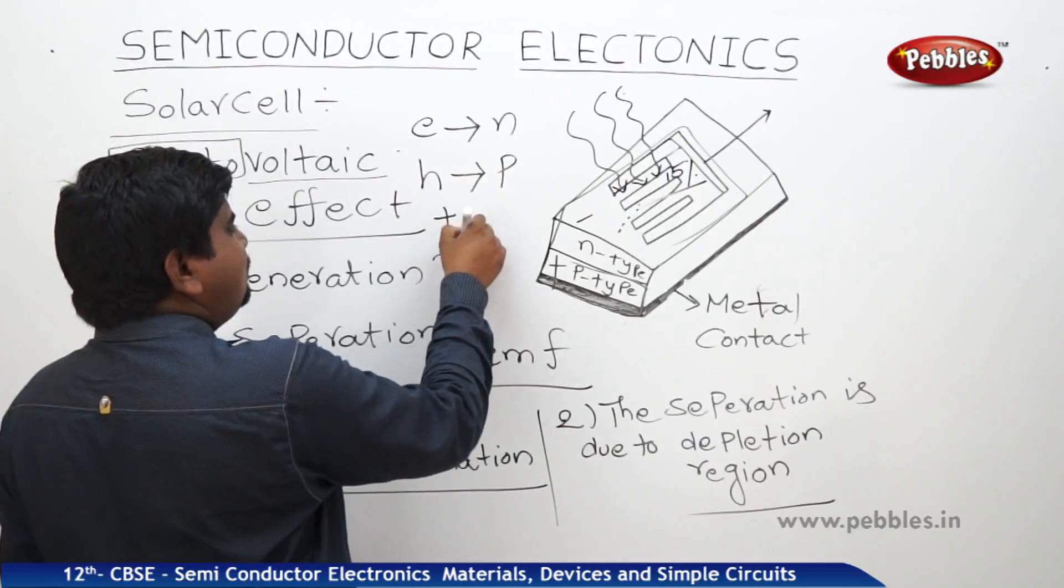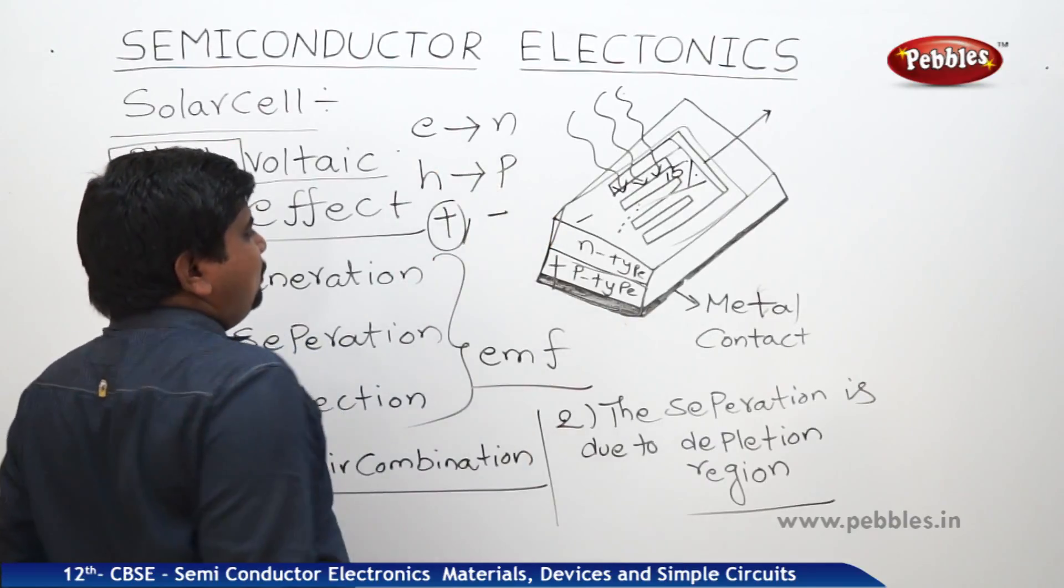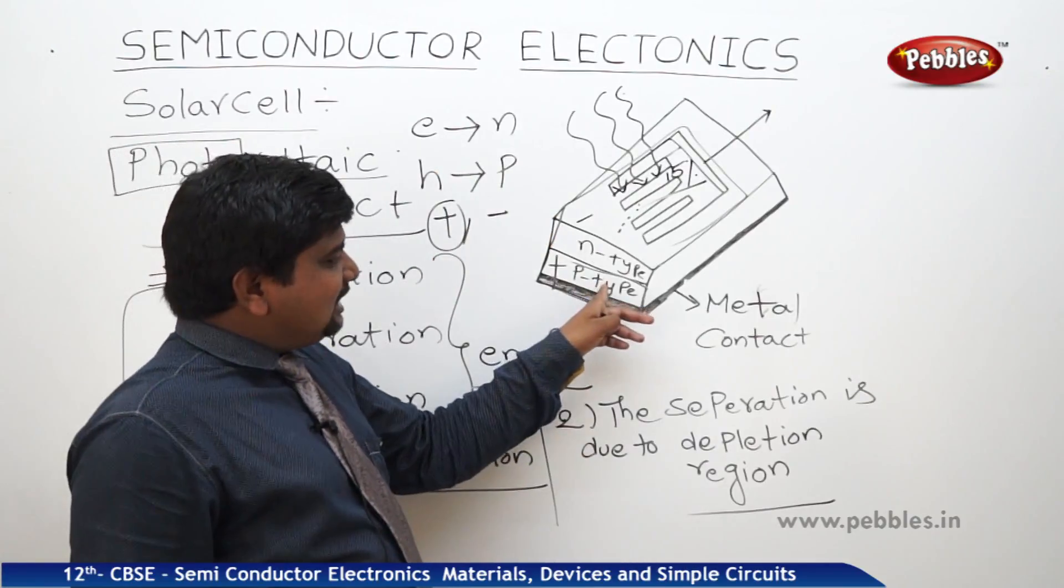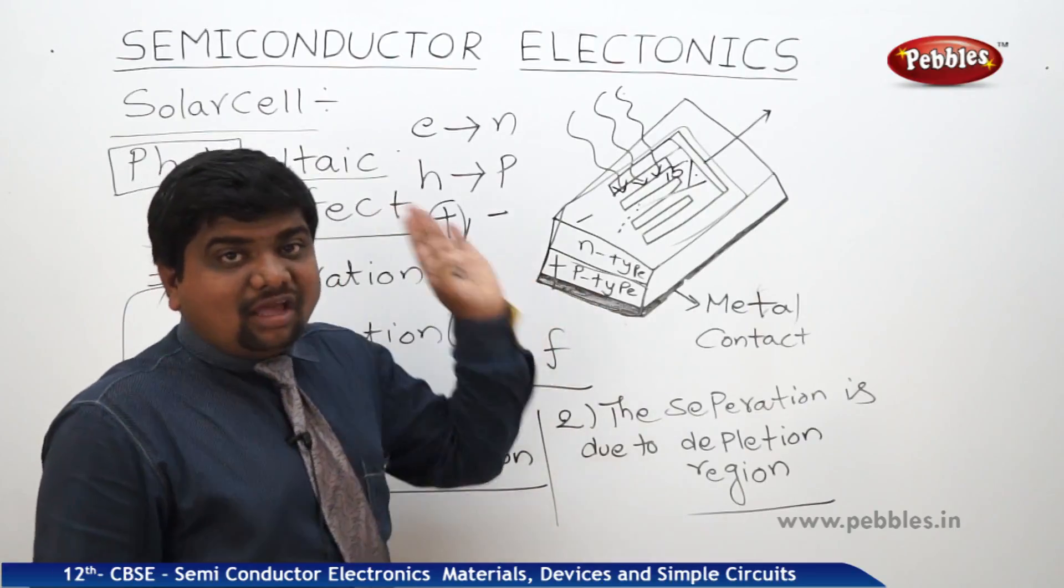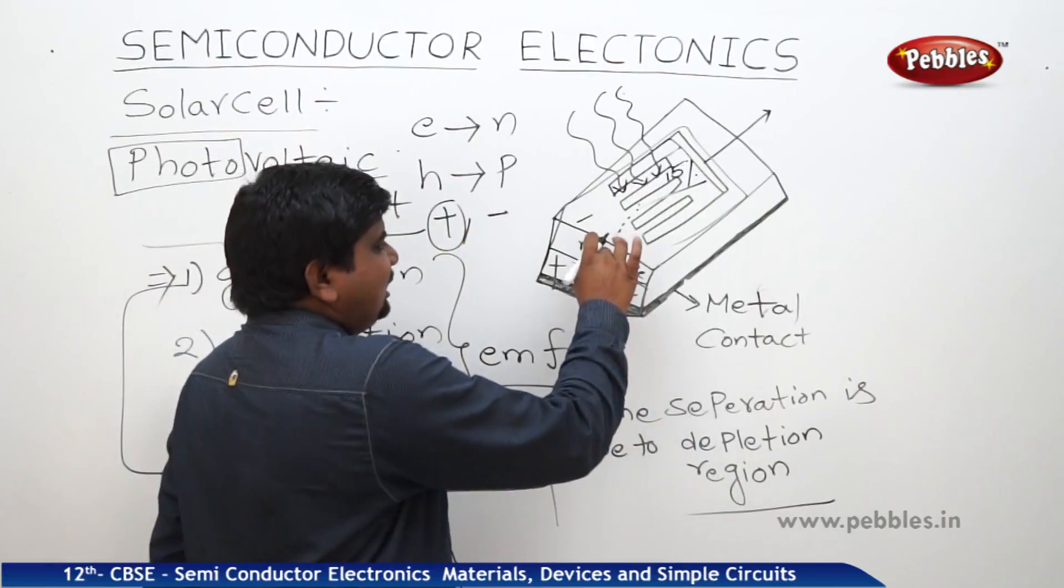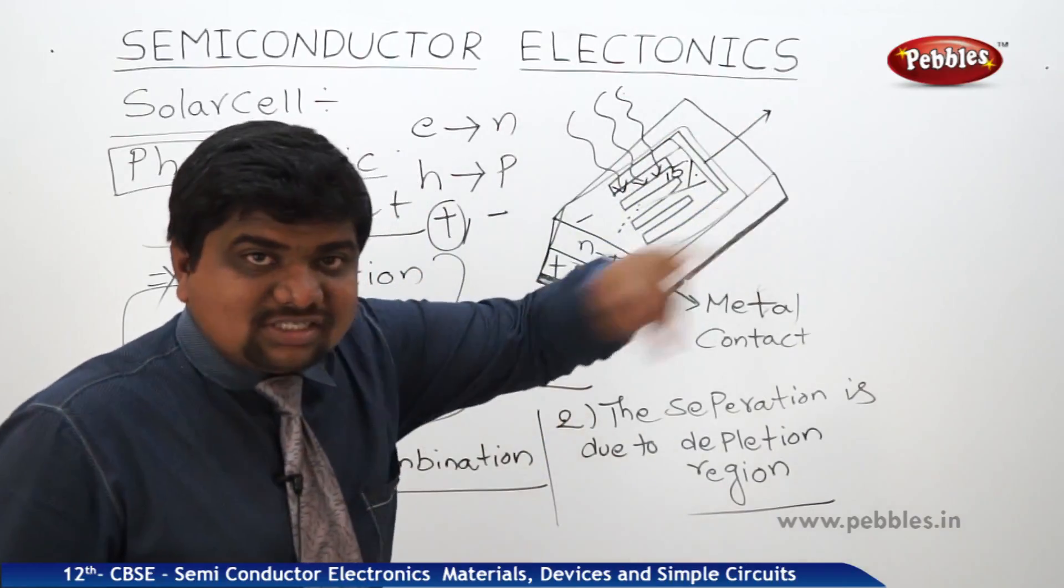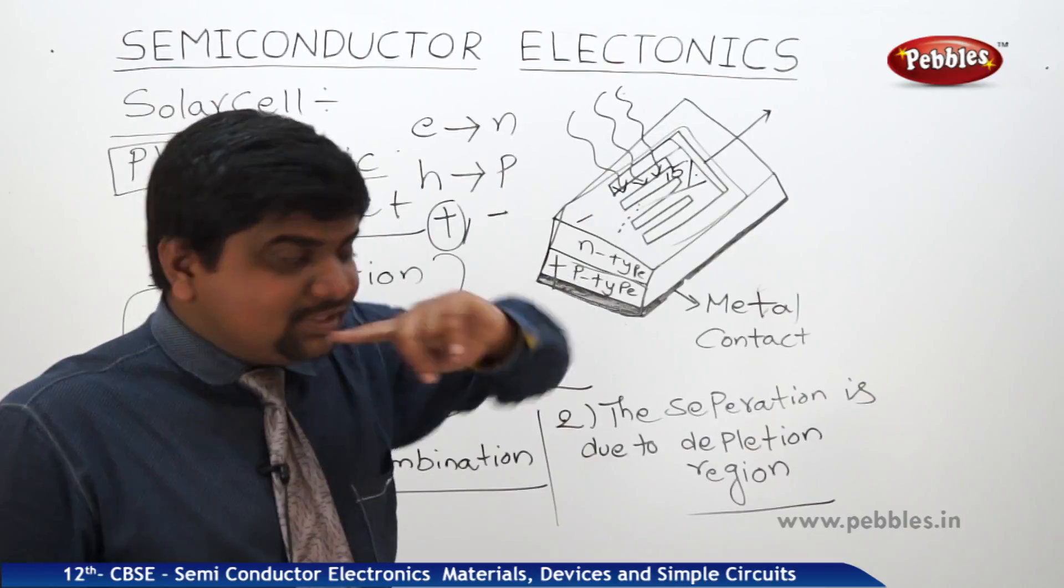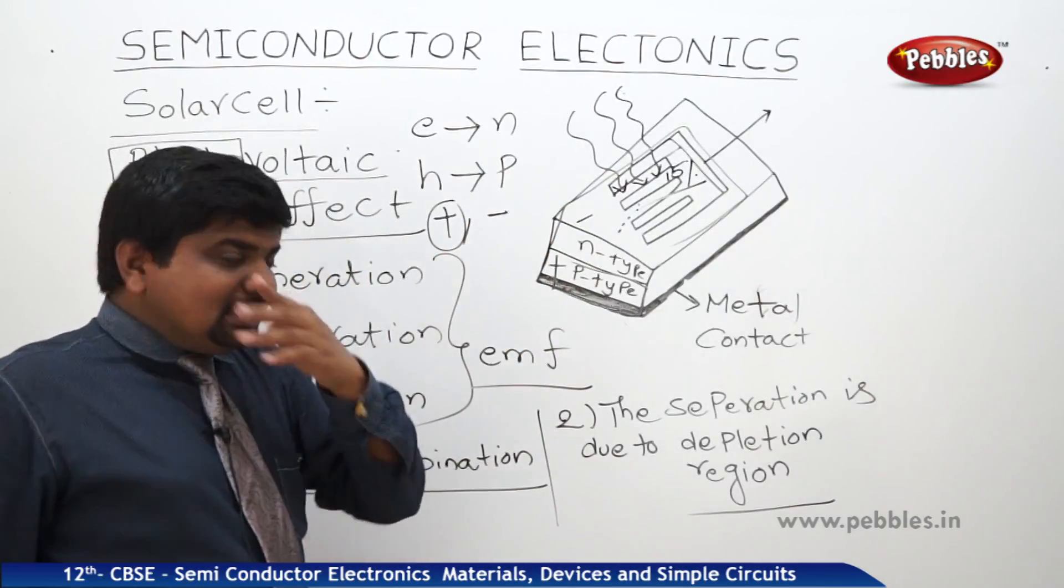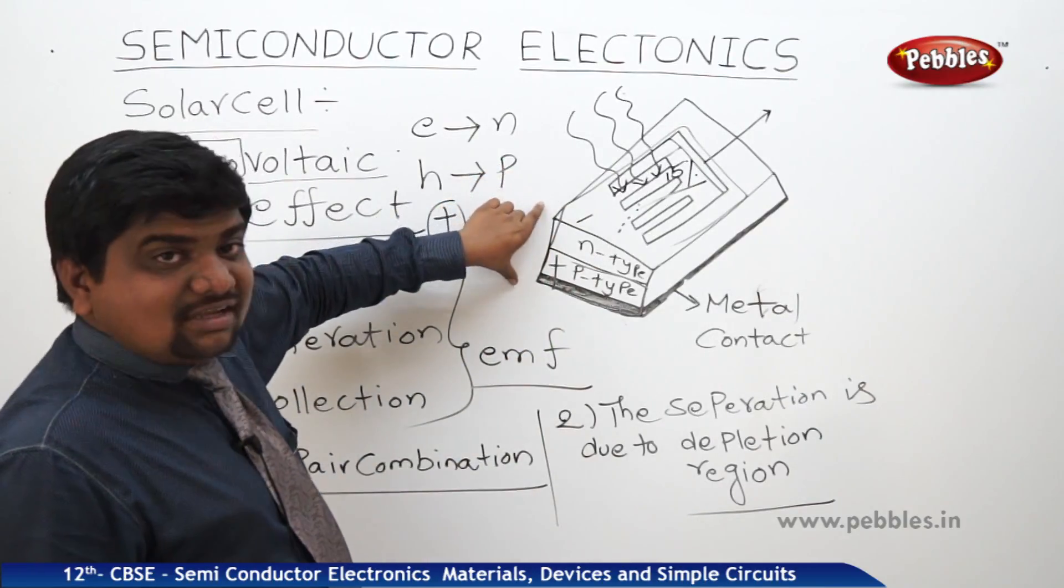This whole block will act as a negative electrode. So, the positive electrode and negative electrode is formed. Positive electrode is nothing but the combination of P-type semiconductor into the metal contact along with holes. Negative electrode is nothing but the n-type semiconductor with metal arm along with the electrons which are sent back to them. So, that's why a potential is developed on either ends of the solar cell.